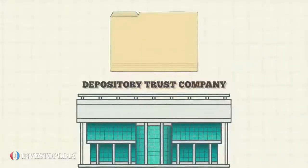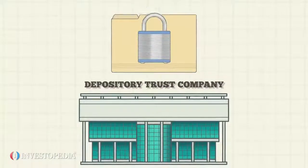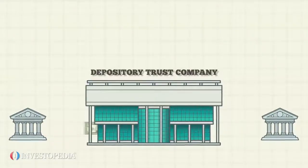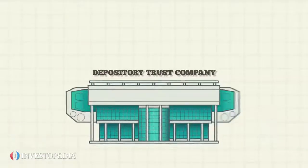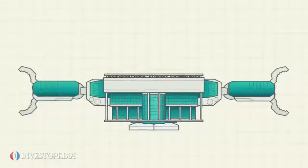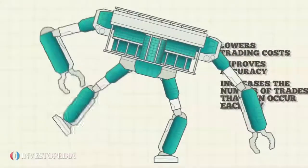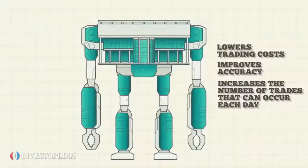It provides electronic record-keeping of securities balances and acts like a clearinghouse to process and settle trades in corporate and municipal securities. Because the DTC is an automated system, it lowers trading costs, improves accuracy, and increases the number of trades that can occur each day.